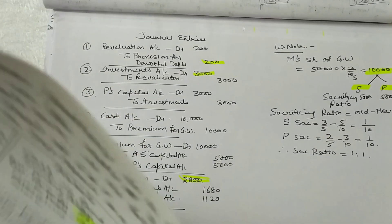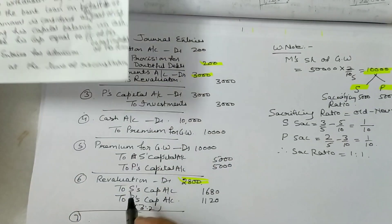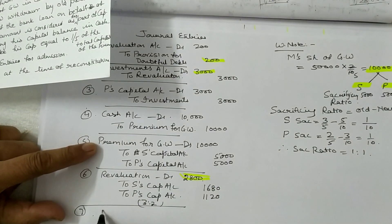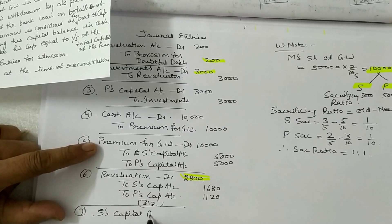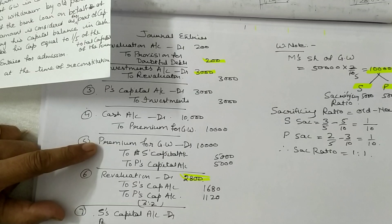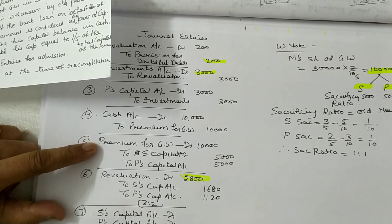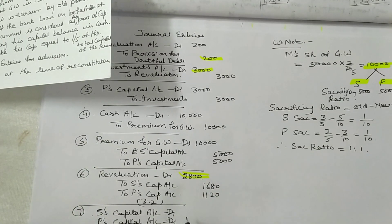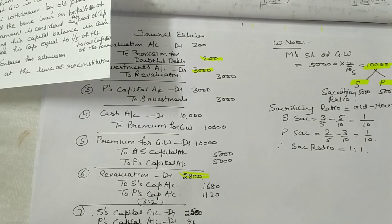Goodwill of the firm is already valued. Now 50% of the goodwill premium is withdrawn by old partners. Entry: S's Capital Account debited and P's Capital Account debited to Cash Account. 50% of 5,000 is 2,500 each, total 5,000.